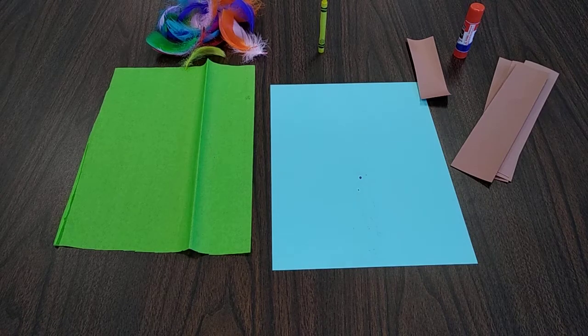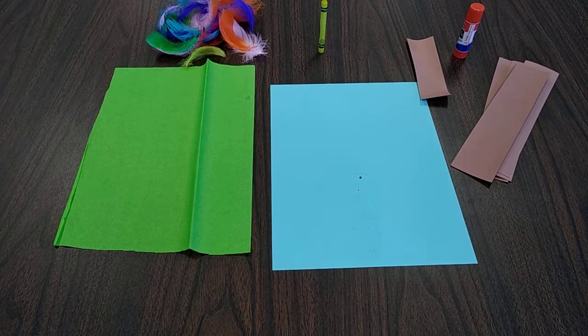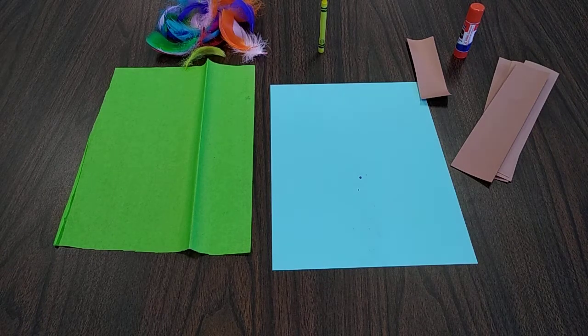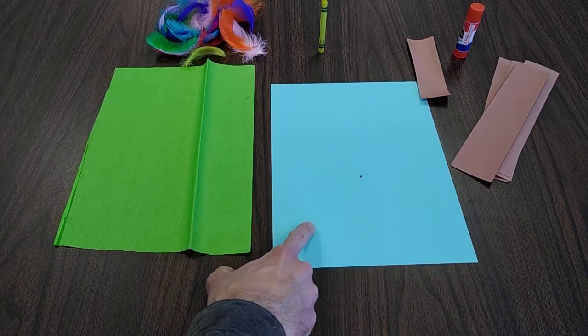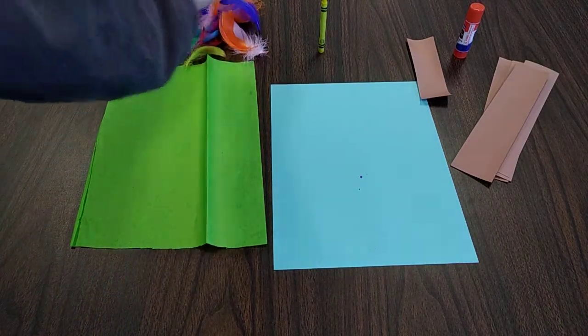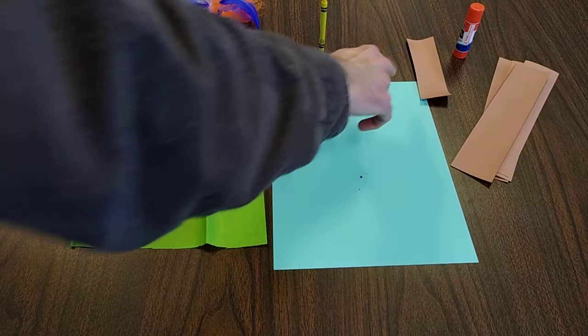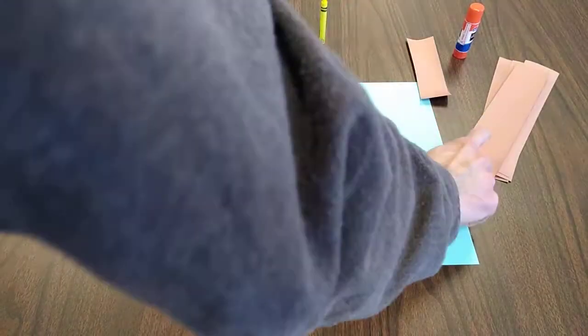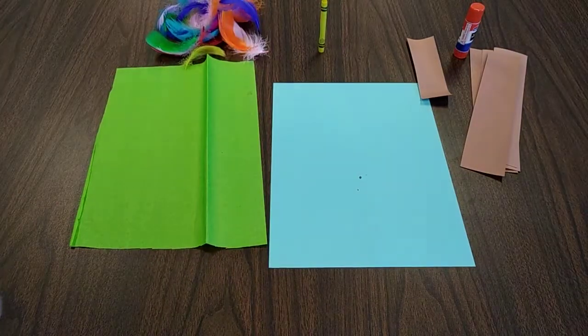Hello everyone, welcome back to Crafts2Go. Today we are making spring trees. So in your kit you should have one piece of blue paper, a piece of green tissue paper, some feathers, a yellow crayon, a glue stick, a piece of short brown paper, and four longer pieces of brown paper.